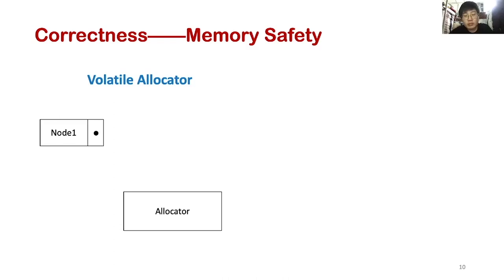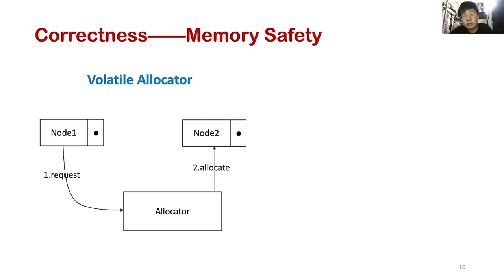For example, we want to allocate a new node connected by node 1. The allocator will first allocate node 2, and then connect node 1 to node 2. Consider the following case: a system crash after allocating node 2, but before persisting the connection. After a restart, node 2 is unreachable, leading to a memory leak.